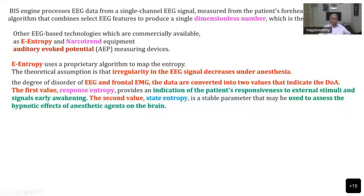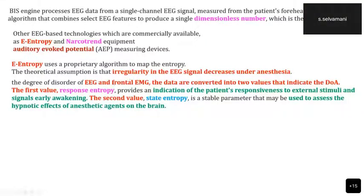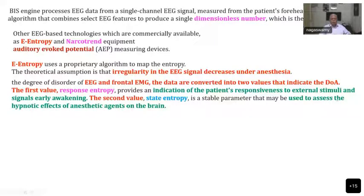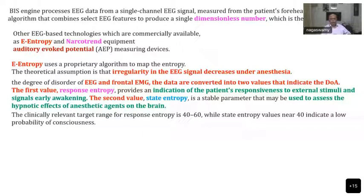There are two types of entropy: response entropy and state entropy. Response entropy is mainly produced by the frontal EMG and to some extent by the brain signals. State entropy is a stable parameter that may be used to assess the hypnotic effects of anesthetic agents on the brain.